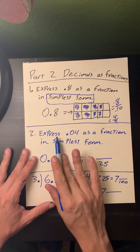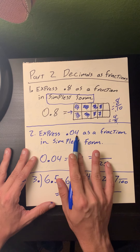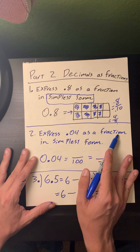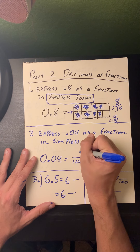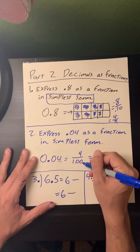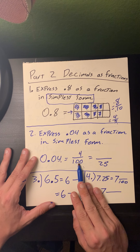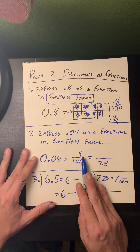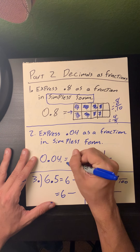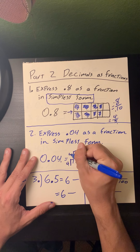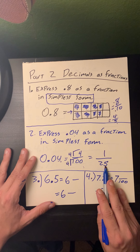Problem number two: express 0.04, or four hundredths, as a fraction in its simplest form. Zero point zero four is equal to four hundredths. Both 4 and 100 can be divided by 4 — they have a common factor of 4. Four divided by 4 is 1, and 100 divided by 4 is 25. So four hundredths is one twenty-fifth.